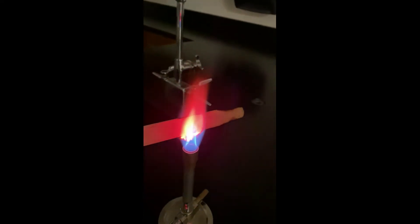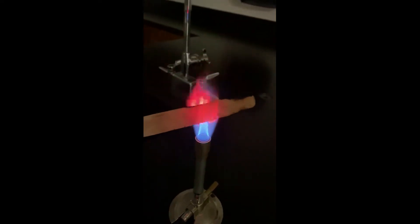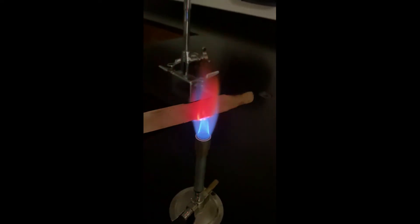And then remember number seven is our unknown substance. So it is going to be a repeat or a duplicate of one of the ones we've already done. So take a look at this color and see if you can match it up with one of the ones we've already shown you today.